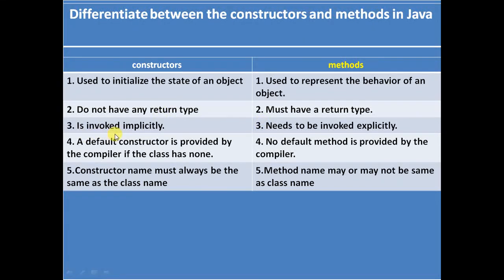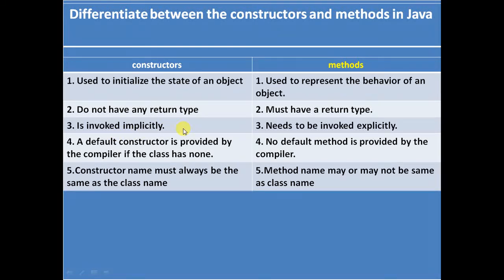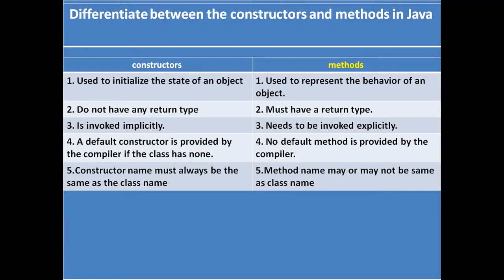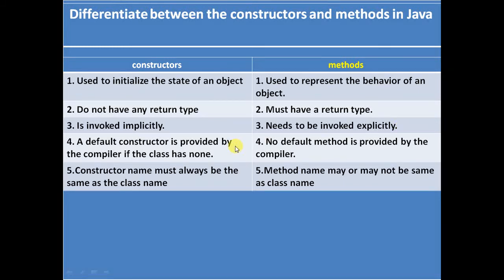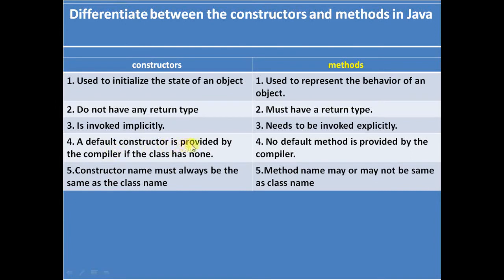Number three: a constructor is invoked implicitly — when you create an object, the constructor is automatically called. For a method, you need to invoke it explicitly; you can call the method by using the object.